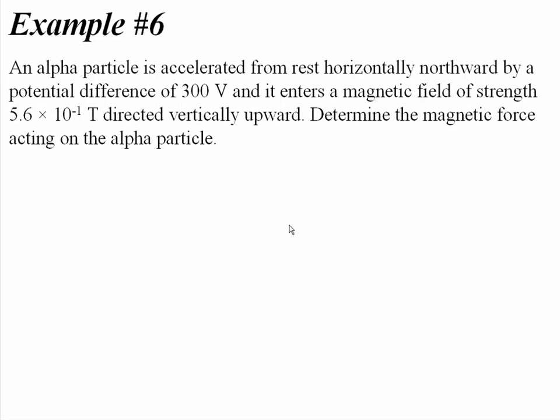Here we have an alpha particle accelerated from rest horizontally northward by a potential difference of 300 volts. It enters a magnetic field of 5.6 times 10 to the negative 1 tesla directed vertically upward. Determine the magnetic force acting on the particle.